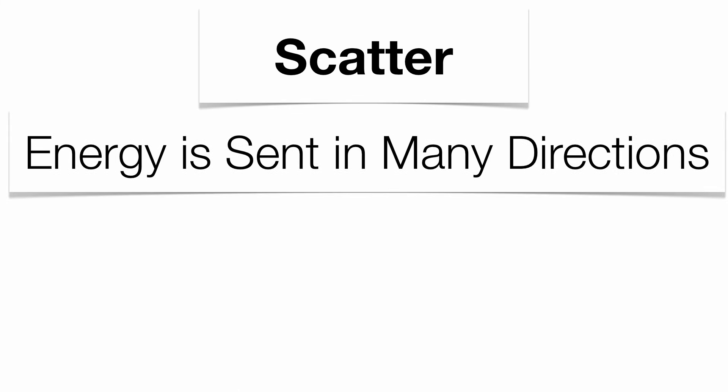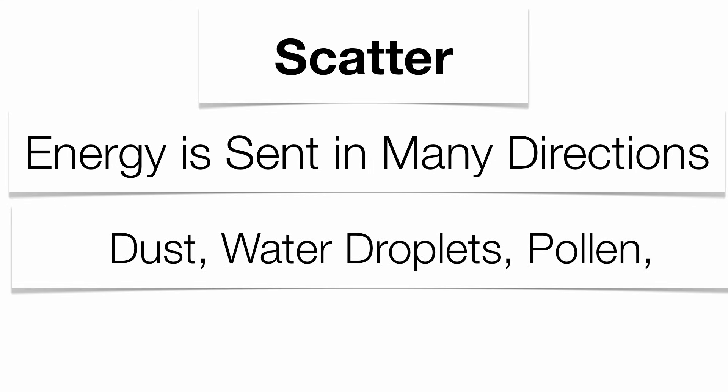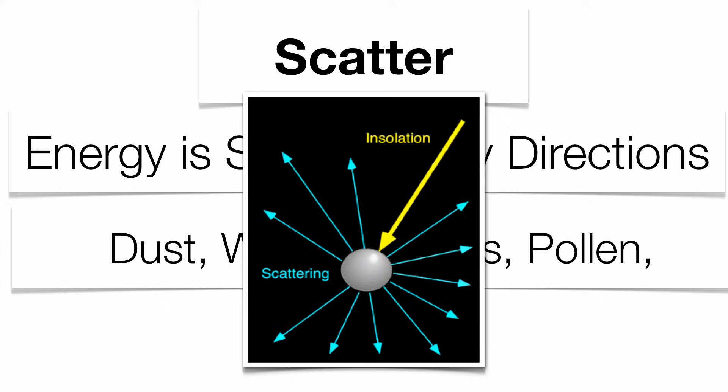Scattering means that your energy is sent in many different directions. Good examples of this up in the atmosphere would be dust, water droplets, pollution, pollen, whatever it may be. Any kind of particulate matter in the atmosphere is going to cause scattering where insulation comes in and scatters in many directions.